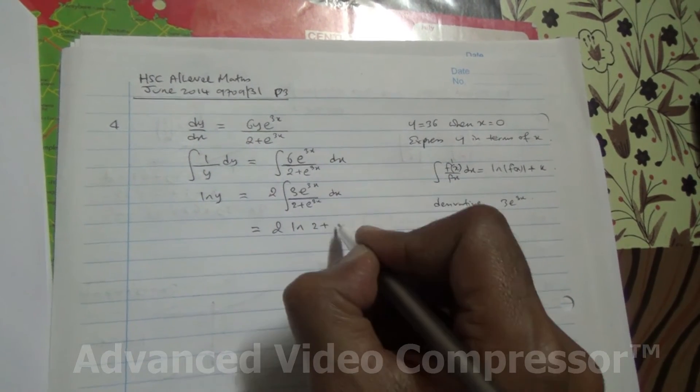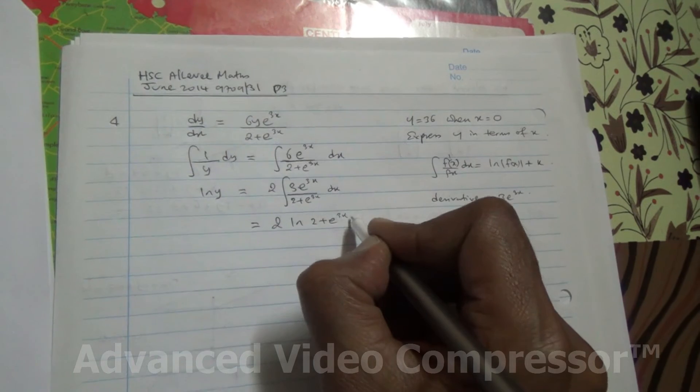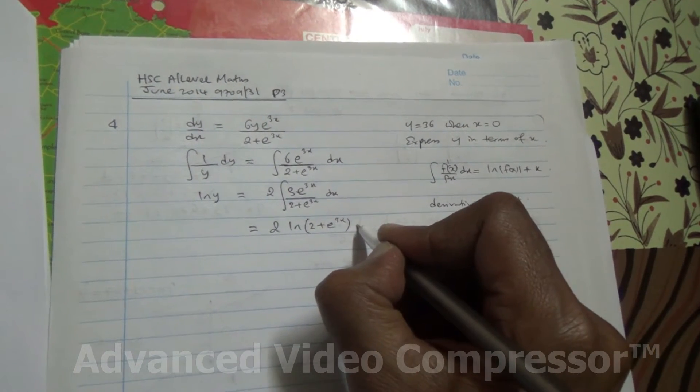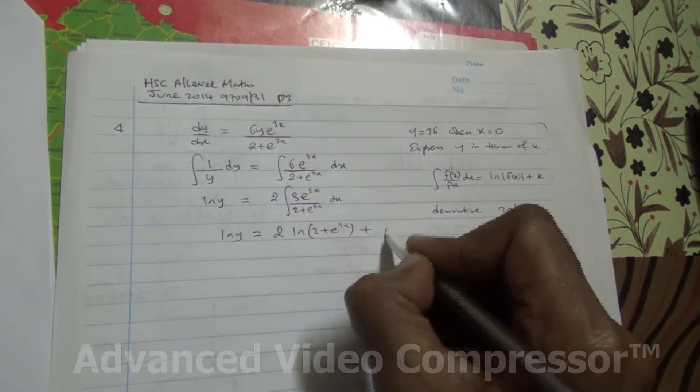it is 2 ln, the denominator, which is 2 plus e to the 3x, and then plus the constant, a.